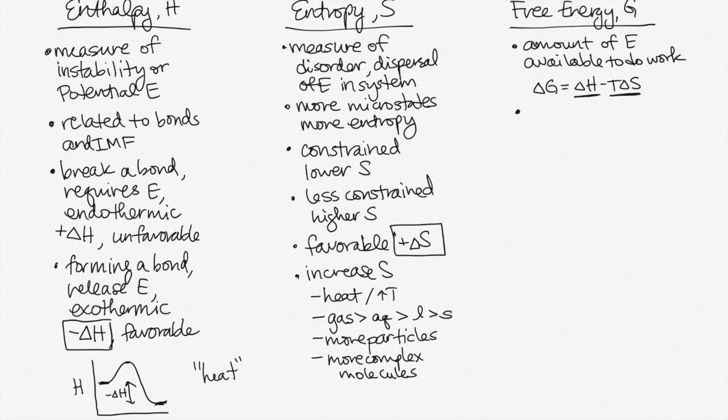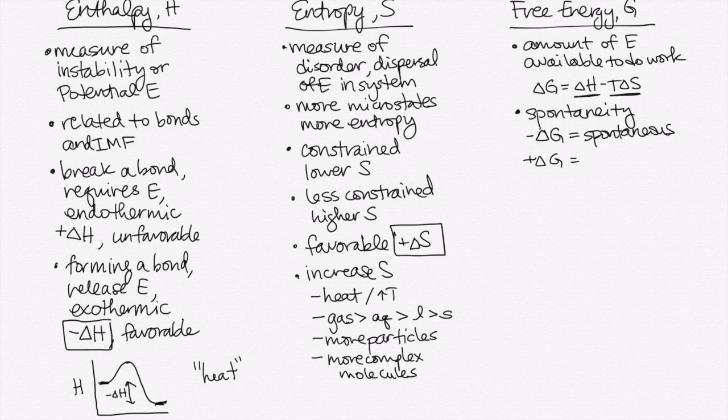The common way that we see this in Chem 106 is to talk about spontaneity. If we have delta G that's negative, then that means we have a spontaneous process. And if we have a positive delta G, that means it's non-spontaneous. And that's just another way of saying that the reverse reaction is spontaneous.